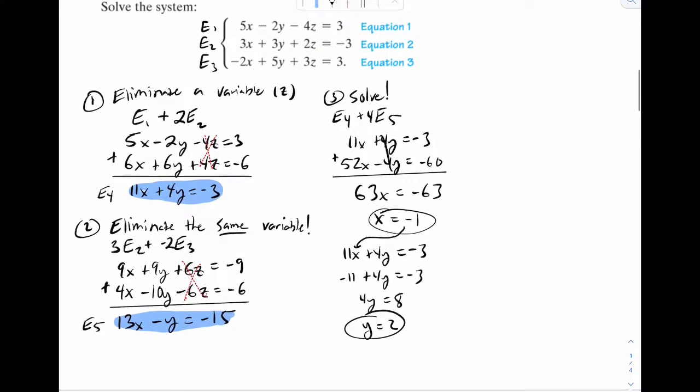And then for the final variable, you can pick any of these. It doesn't really matter. I'll pick equation 1. 5x minus 2y minus 4z equals 3. We plug in negative 1, negative 5. Plug in 2, minus 4. And now we can solve for z. So negative 9 minus 4z must equal 3. Negative 4z is equal to 12. So z must be negative 3.